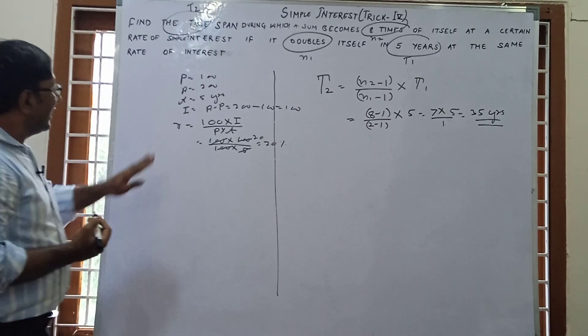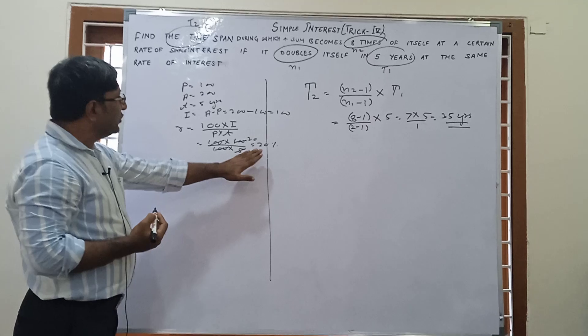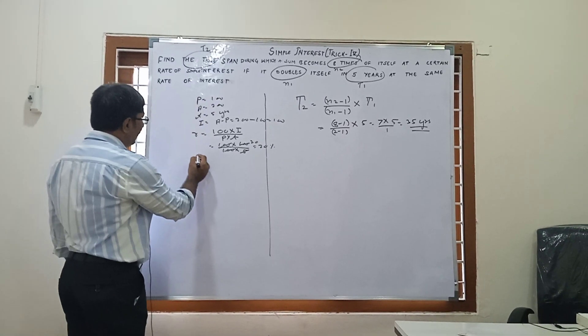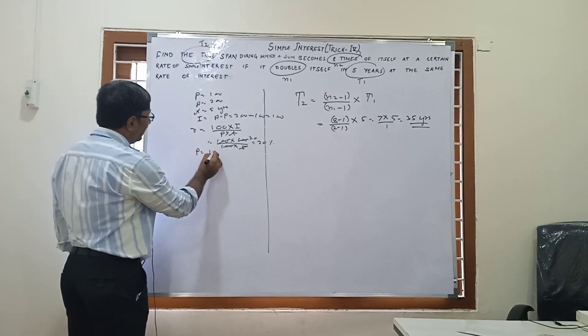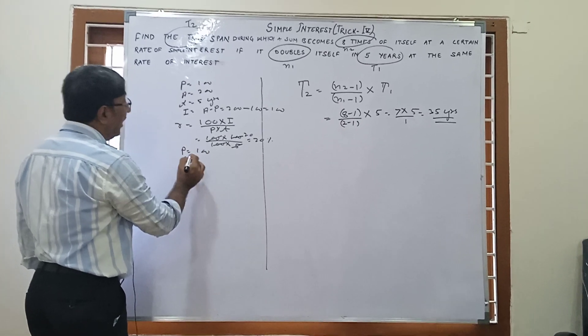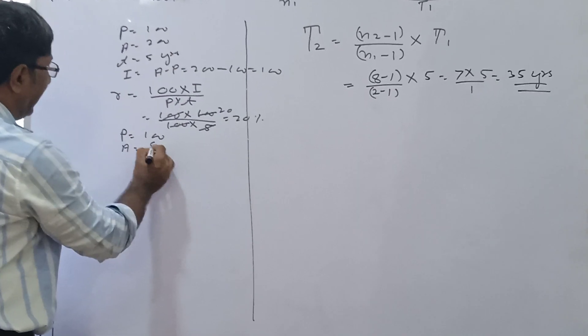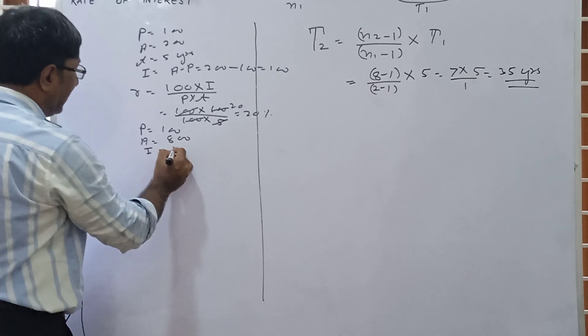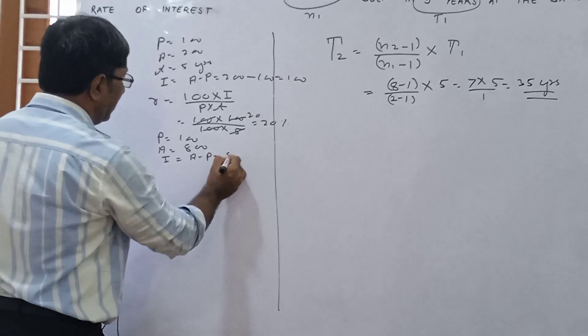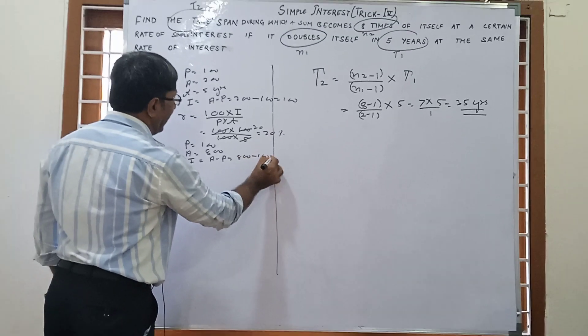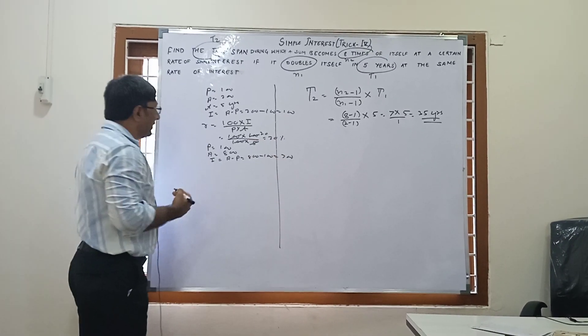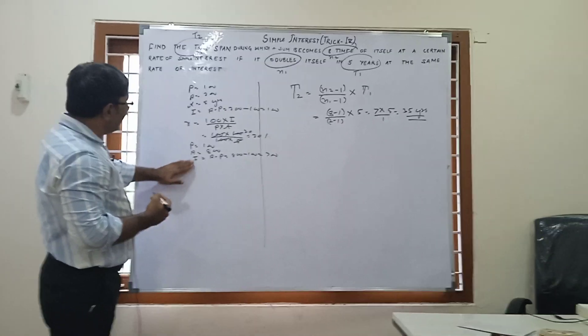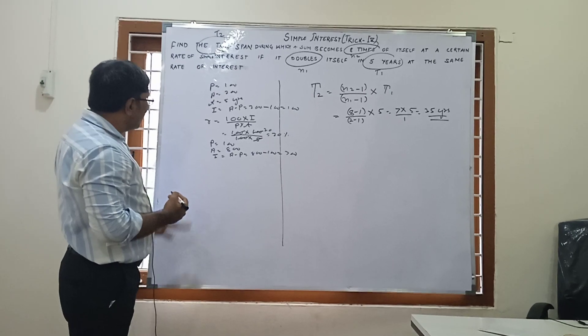In the second case, the rate is same, 20%, and it's 8 times. If principal is 100, then amount will be 8 times, that is 800. Again, simple interest is A minus P, so 800 minus 100, that is 700. Principal is given, interest is given, rate 20% is given.